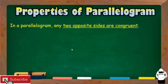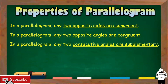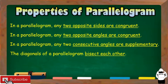First, in a parallelogram, any two opposite sides are congruent. Second, in a parallelogram, any two opposite angles are congruent. Three, in a parallelogram, any two consecutive angles are supplementary. Fourth, the diagonals of a parallelogram bisect each other.